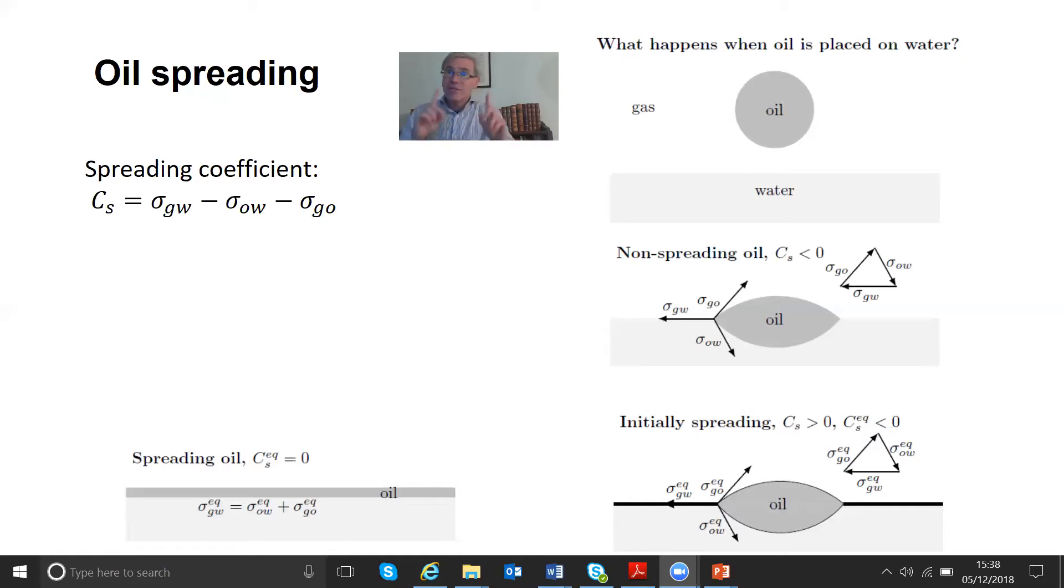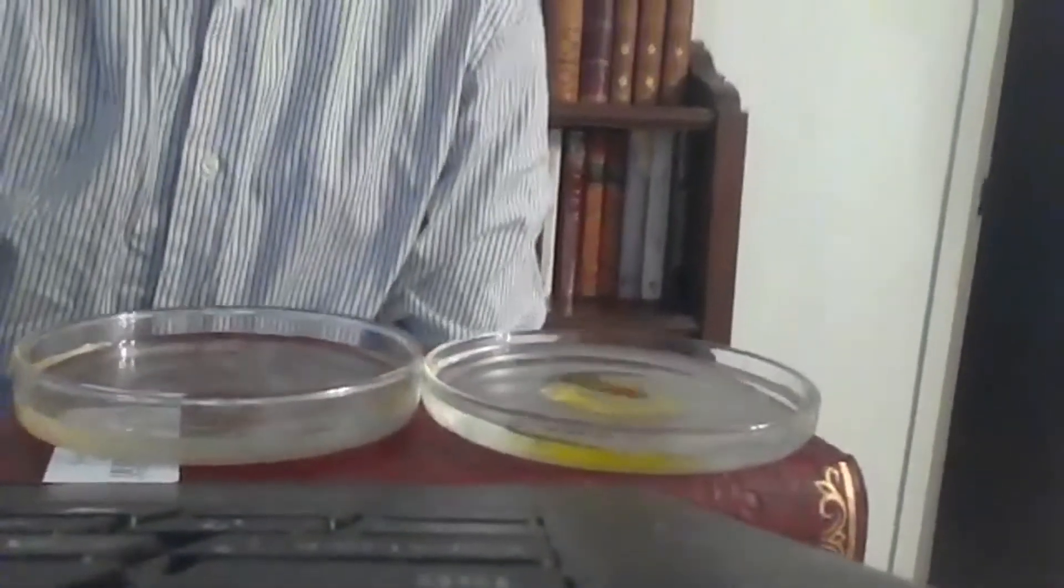Okay, so that's what we see theoretically. Now let's see what happens in reality. I'm going to start here showing the system. I'm going to put some olive oil first of all on one of the dishes. You can see it now in profile. There's olive oil here that hasn't spread. If I move the camera around so you look at it from the top, you can see quite clearly that it forms a sort of flat pancake. It hasn't completely spread out. So this olive oil is in fact a slightly non-spreading oil.